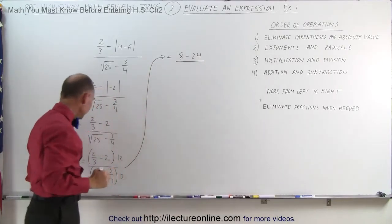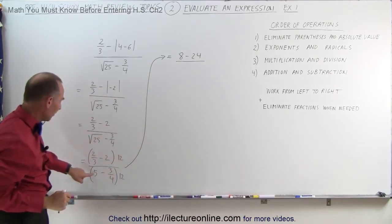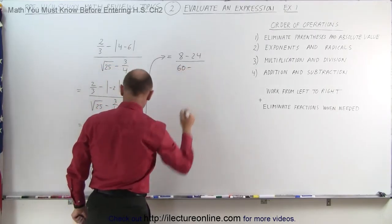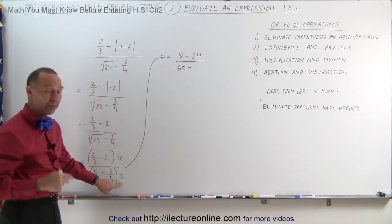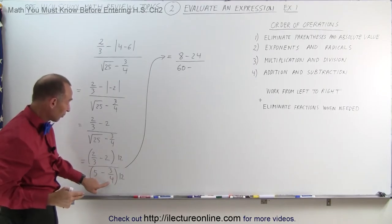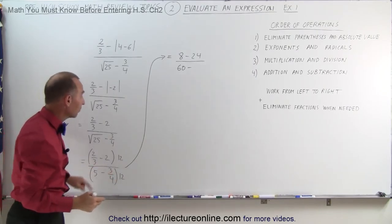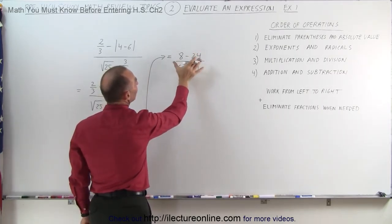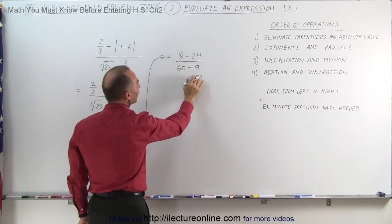Divided by, in the denominator, we have 5 times 12 which is 60 minus, now 4 goes into 12 three times, so 12 divided by 4 is 3, 3 times 3 is 9, times a minus, that's minus 9. Notice now we have 8 minus 4 divided by 60 minus 9. This is a division.